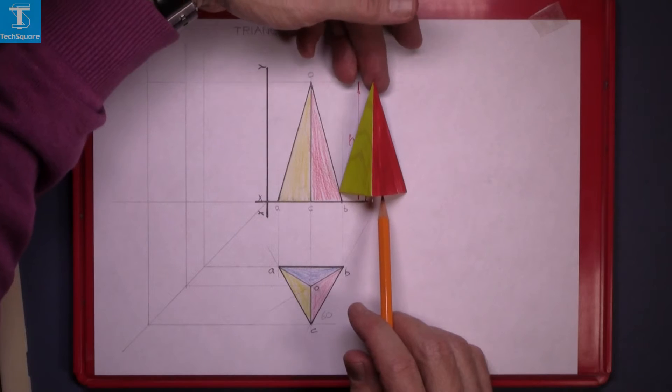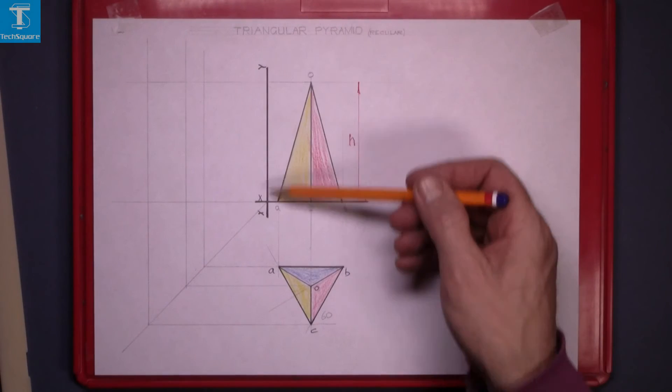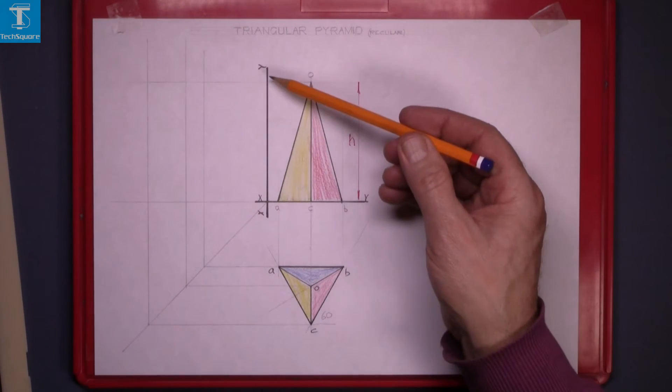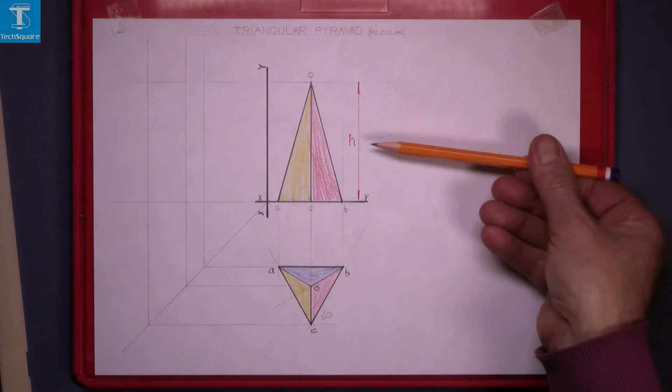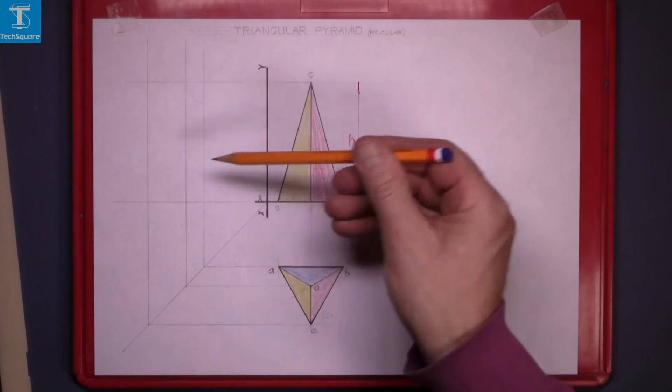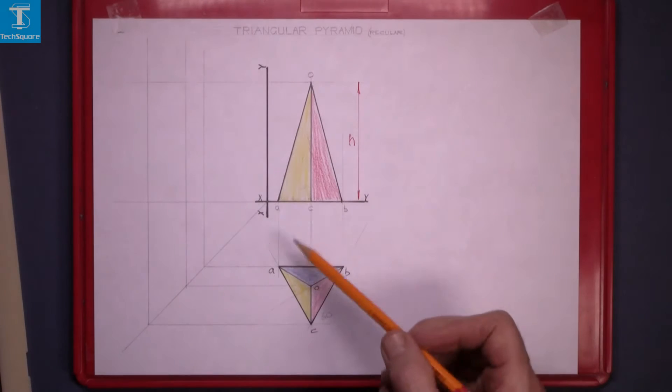And that's the pyramid drawn. We're given this new x-way line on the left hand side. We're going to project from the right hand side at 90 degrees to the x-way line to get the end view over here.